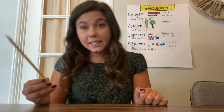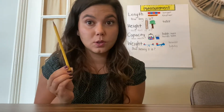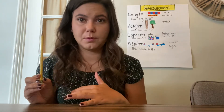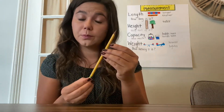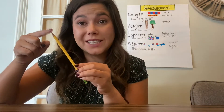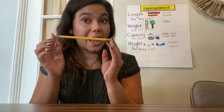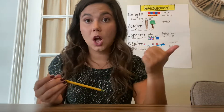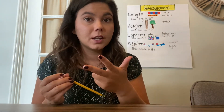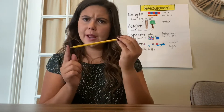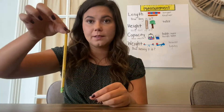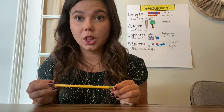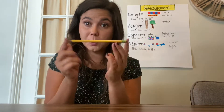Let's talk about this pencil and some of the ways we could describe it using our measurement words. If we're not using measurement words, you might describe the color — you might say it's yellow — or you might say it's pointy. But we don't want to talk about how it looks. We want to describe it using measurement words like longer, shorter, and taller. You might say that pencil looks tall, or that pencil looks long. Those are some measurement words we could use to describe it.